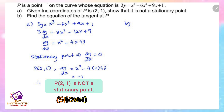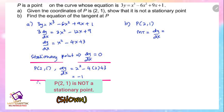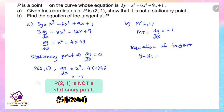For part (b), find the equation of the tangent at P. Point P is (2, 1). To find the equation, we need the gradient m tangent, which comes from dy/dx. We already found in part (a) that m tangent equals negative 1. Using the formula y minus y₁ equals m times (x minus x₁): y minus 1 equals negative 1 times (x minus 2). So the equation of the tangent at point P is y equals negative x plus 3.